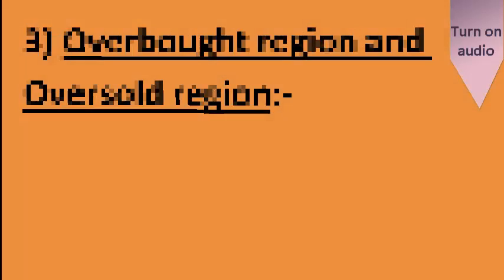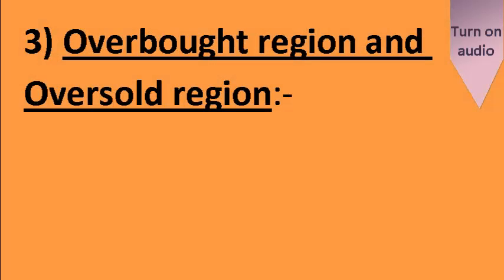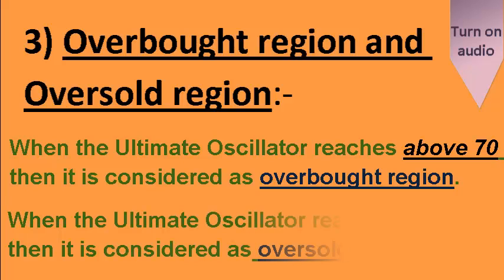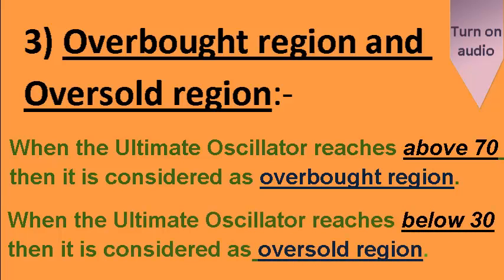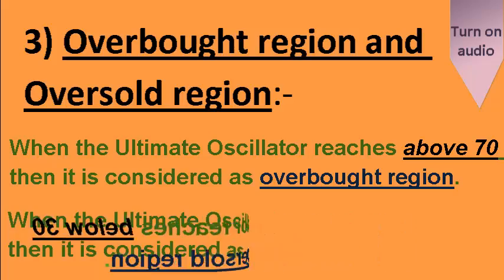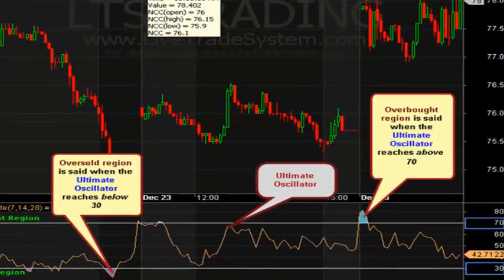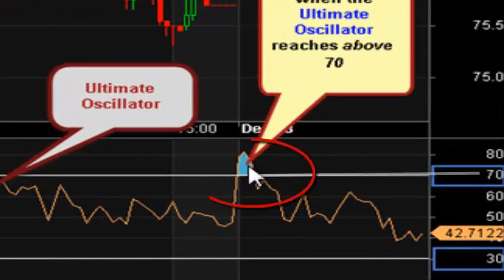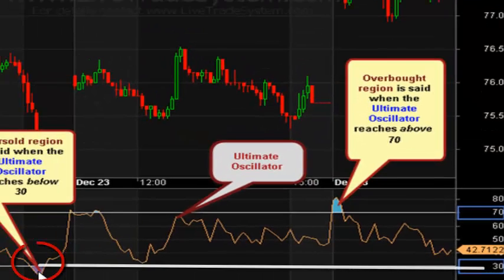Now we will go through the terms overbought region and oversold region. When the Ultimate Oscillator reaches above 70, it is considered as the overbought region. When the Ultimate Oscillator reaches below 30, it is considered as the oversold region. In this chart you can see both regions — here the Ultimate Oscillator reaches above 70 which is the overbought region, and here it reaches below 30 which is the oversold region.